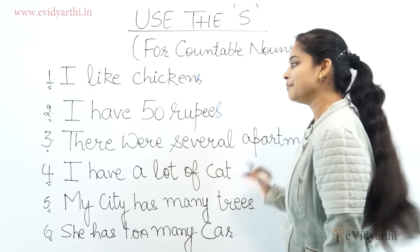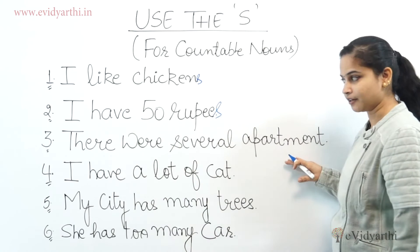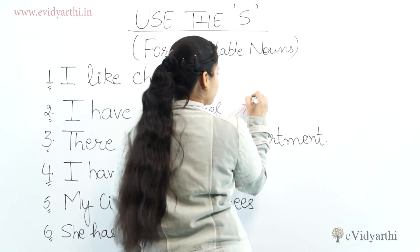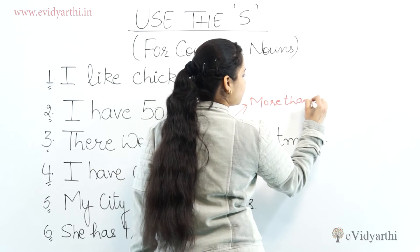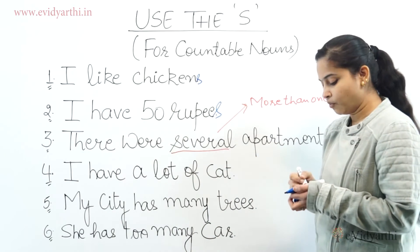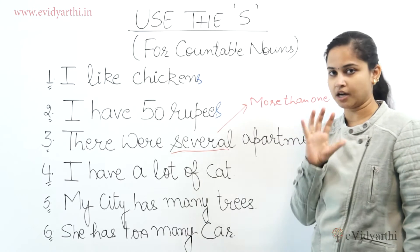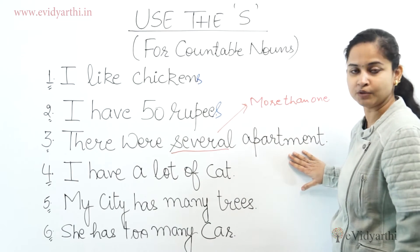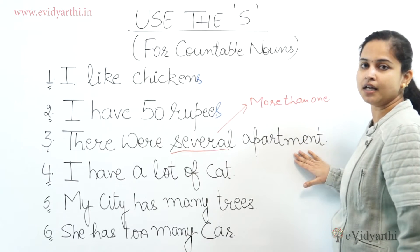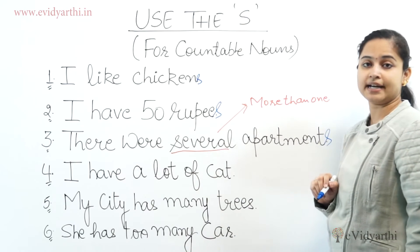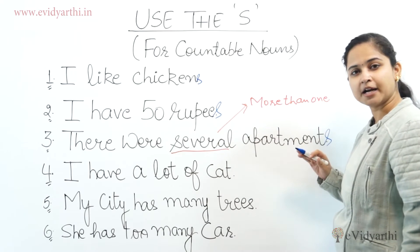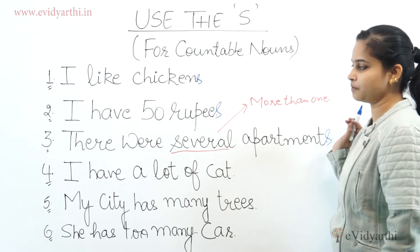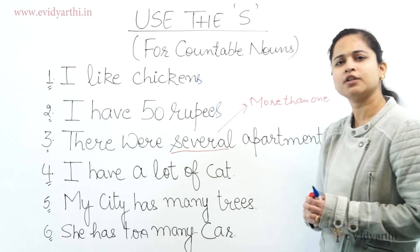अगला example — 'There were several apartment' — यह गलत है। Several का मतलब है more than one। Apartment एक countable noun है, तो हम इसके end में S लगाएंगे as a suffix। सही sentence होगा 'There were several apartments' — यह बिलकुल correct है।